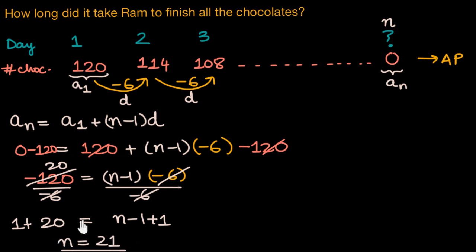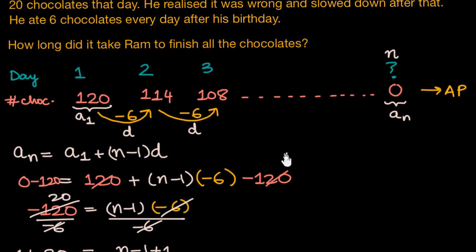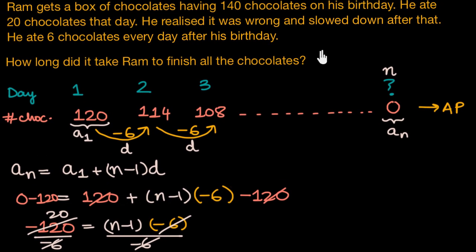So it takes 21 days for Ram to finish off all his chocolates. So Ram takes 21 days and n is equal to 21 here.